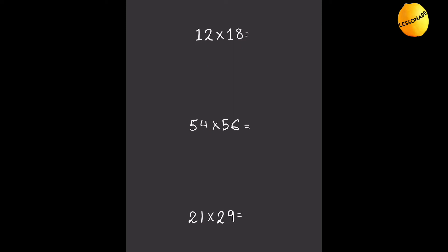The second thing that's special about them is that they all have the same tens value. On the first one they have a tens value of 1, on the second one a tens value of 5, and on the third one a tens value of 2. So now let's get started with 12 times 18.